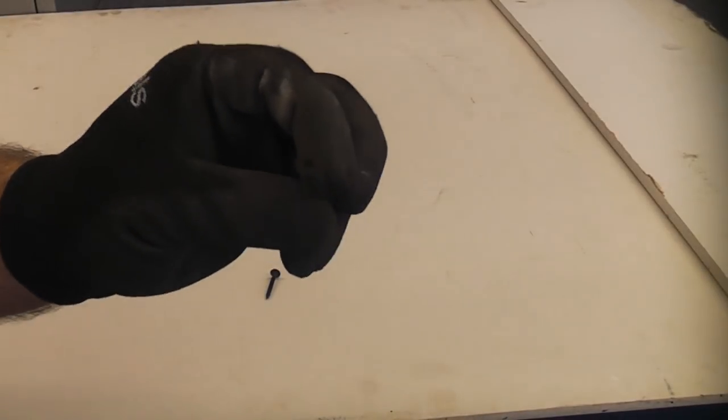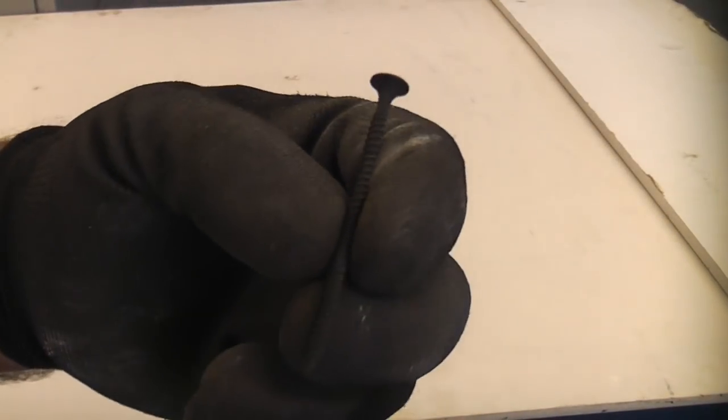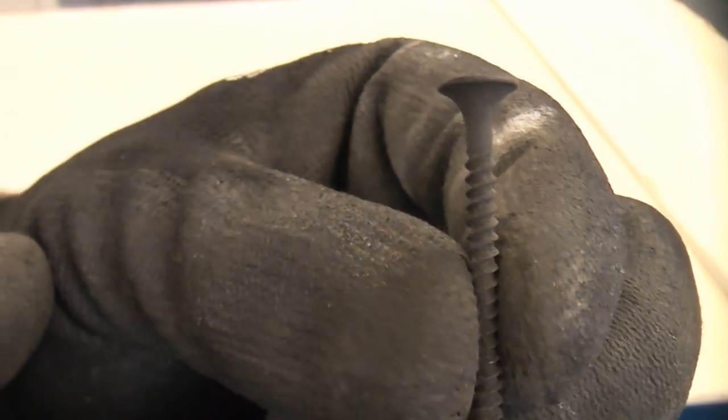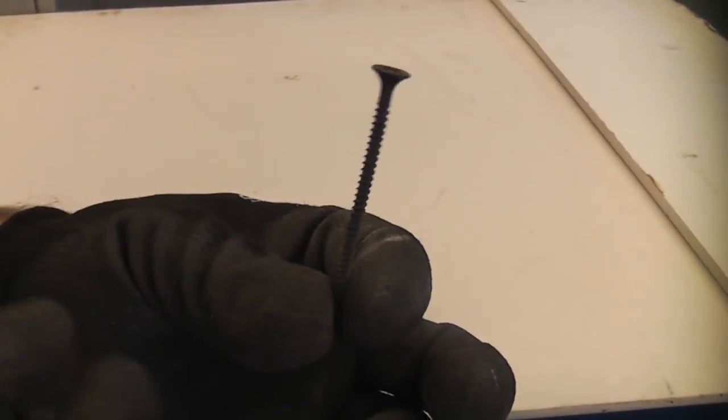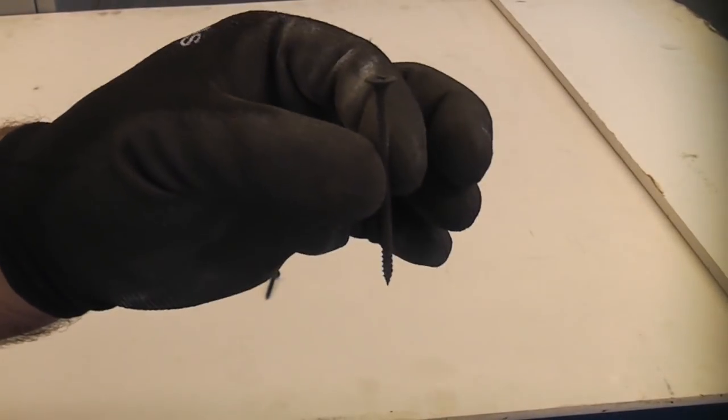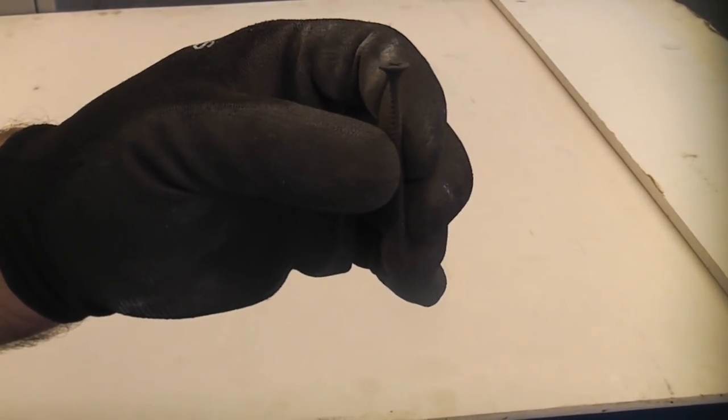Whenever you're fixing plasterboard to timber, it's essential that you always use drywall screws. These are specifically made for this job. They have a bugle-shaped head which is designed not to damage the plasterboard like a countersunk screw would. They're easy to drive in and they are one of the strongest screws you can get. They're also treated so they won't rust.